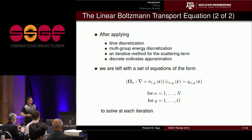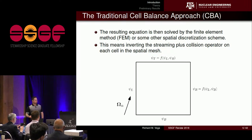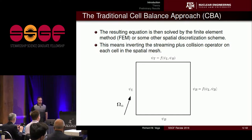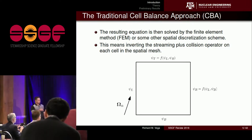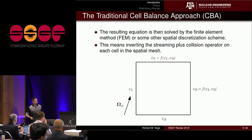That looks pretty simple until you consider that we're solving this for every angle in an angular quadrature set. We typically use the finite element method or a cell balance finite volume method to solve this — essentially inverting the streaming plus collision operator on every cell of our mesh. For an angle in a given direction, the flux comes in on the bottom and left faces of the cell, and the flux exiting the top and right are functions of those incoming fluxes.